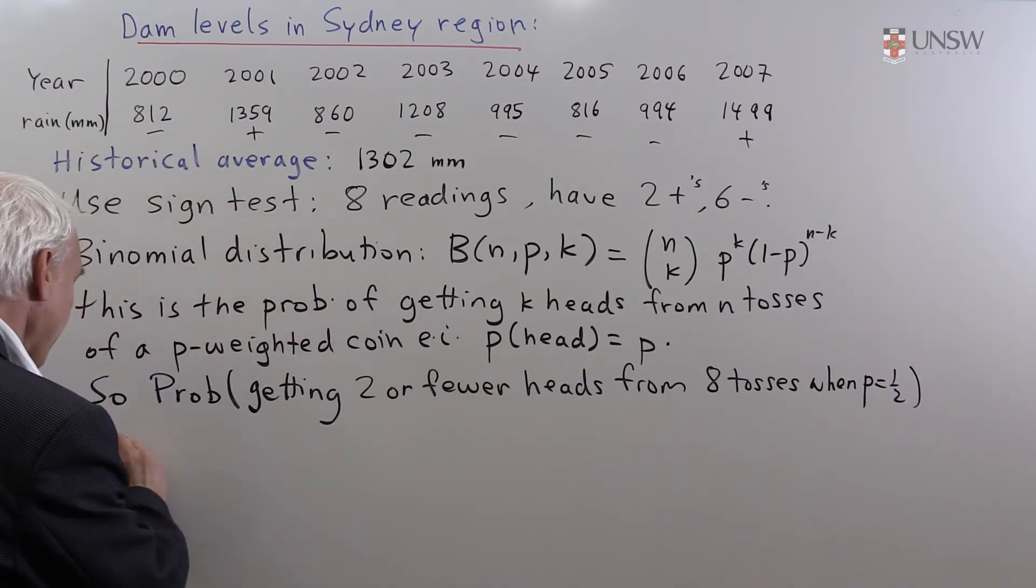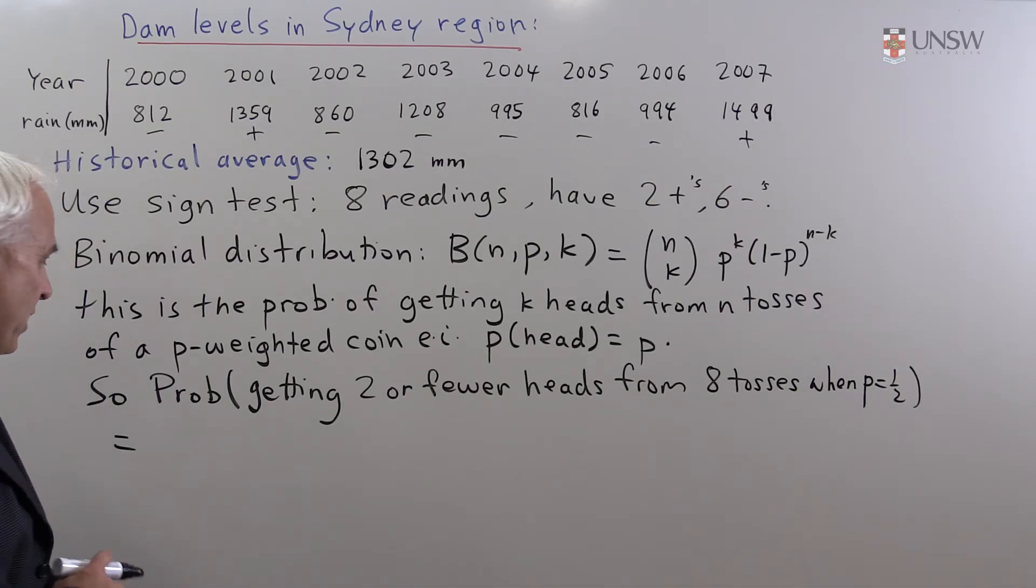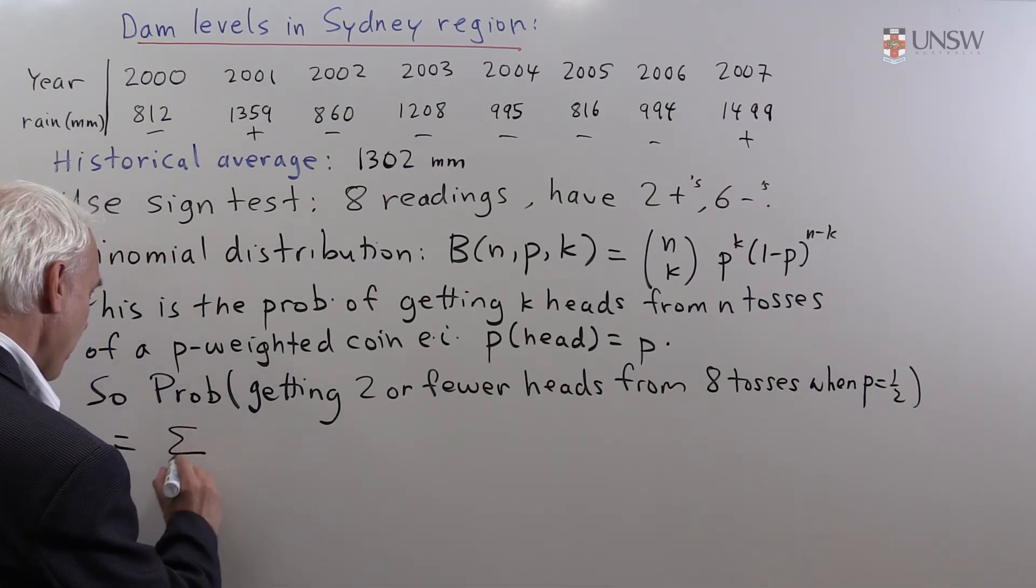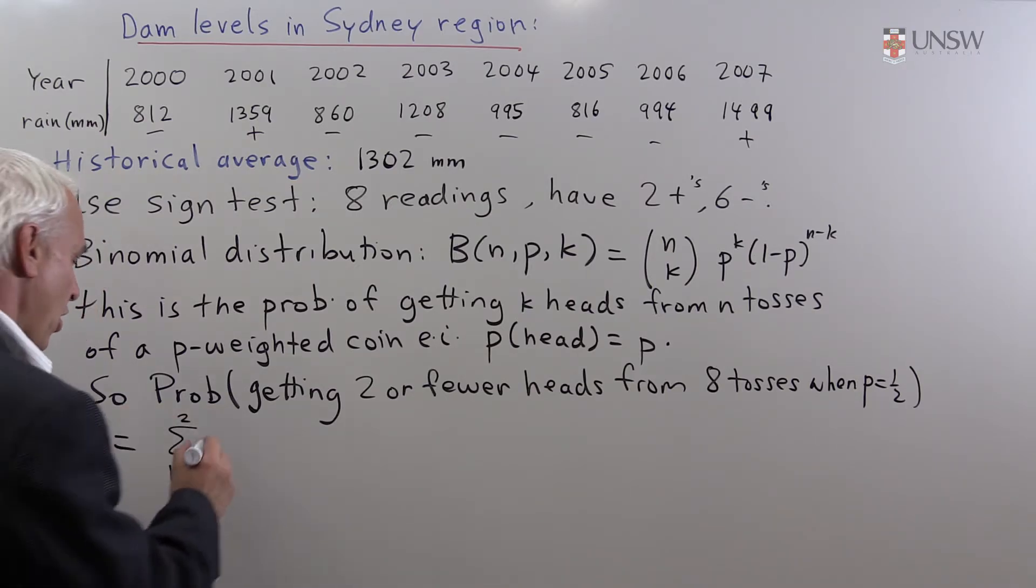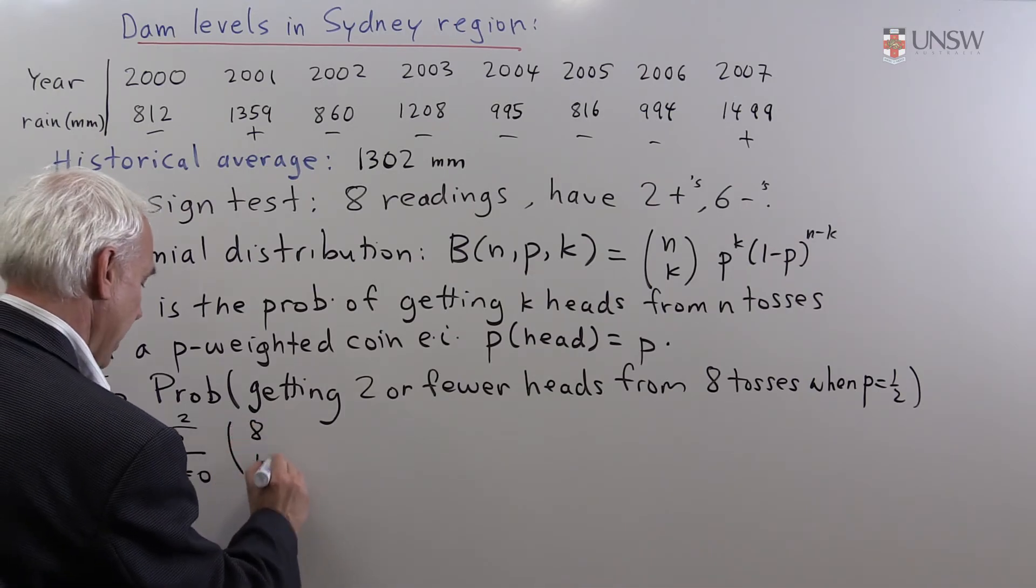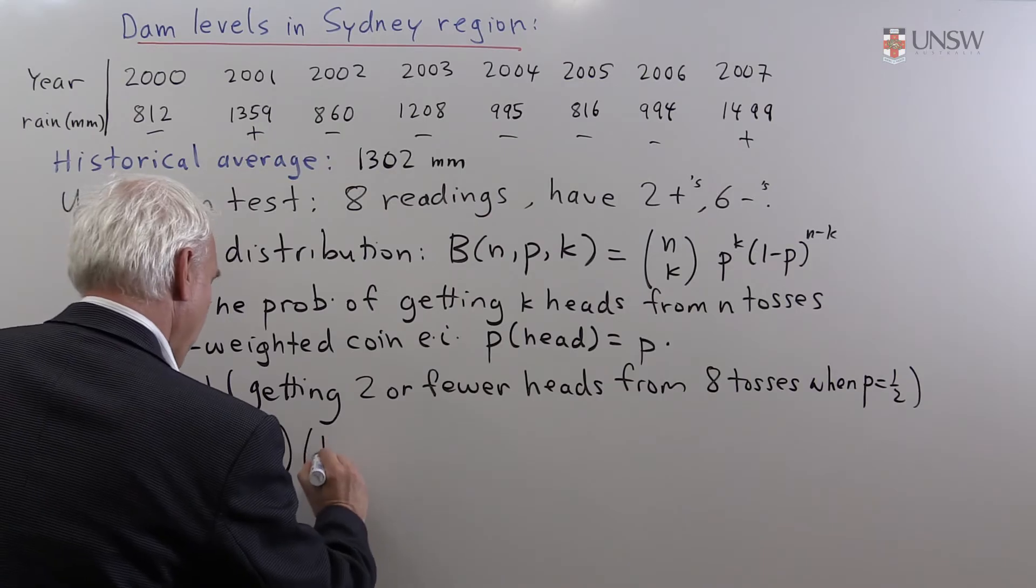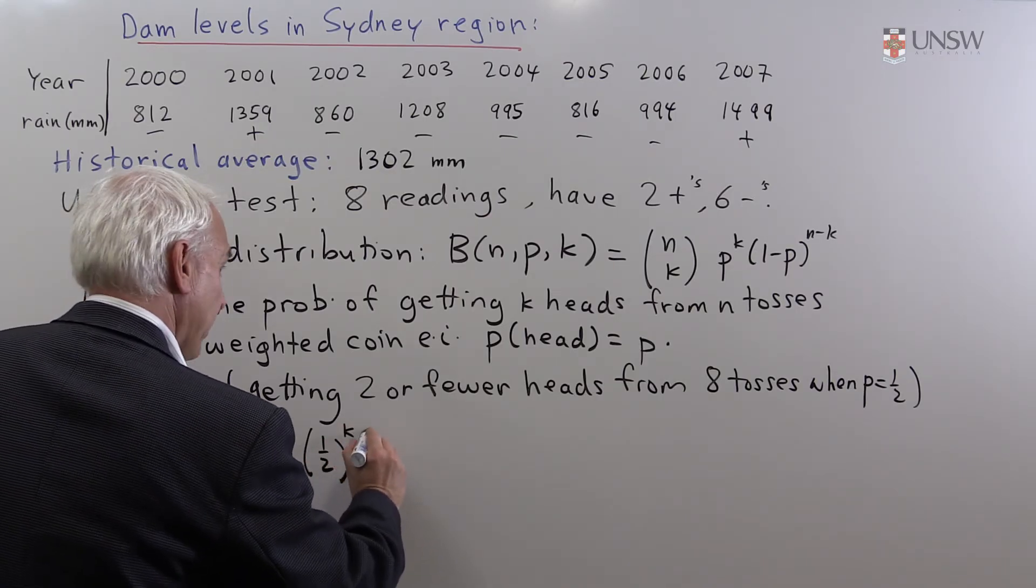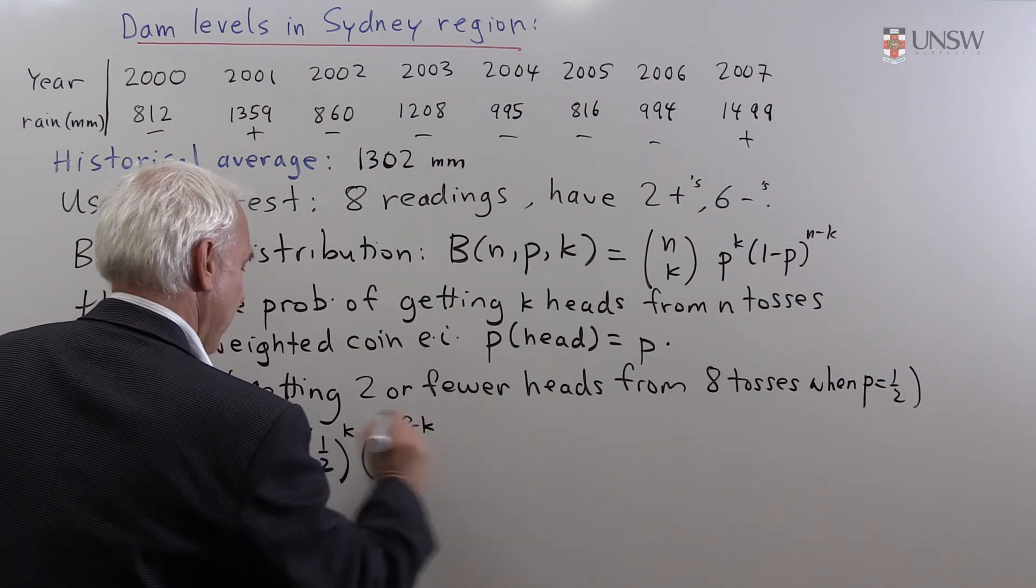Well, we're going to write that as a binomial distribution expression. So that's the sum from k equals zero to two of n choose k. N is eight. So eight choose k. P is a half. So it's one half to the k. And then one minus p will also be a half. So that will be one half to the eight minus k.